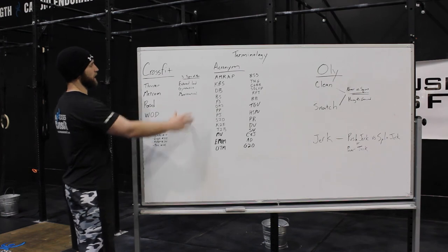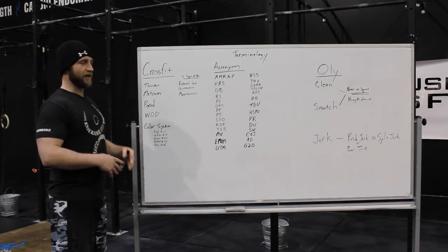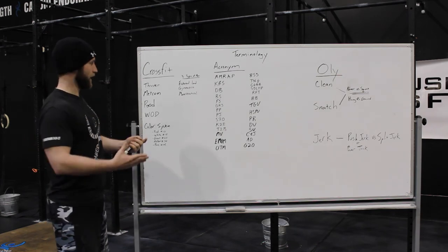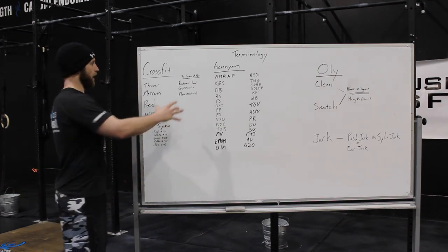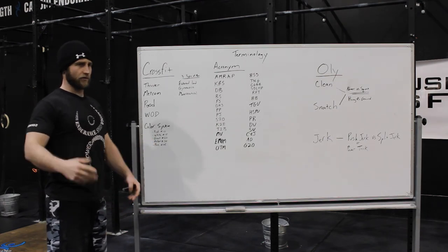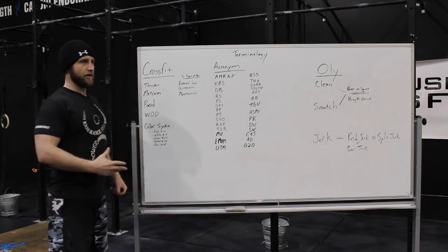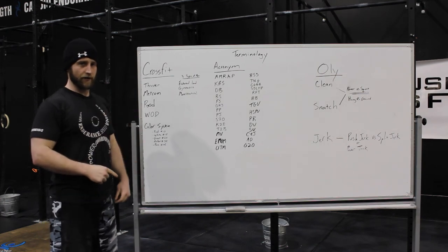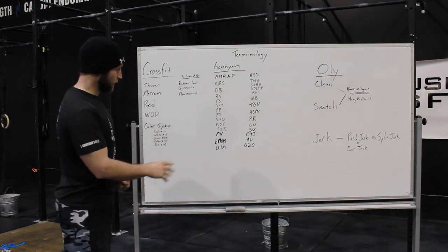The three types of movements we do are classified as: externally loaded movements — anything with weight, like medicine balls, kettlebells, farmers carries, barbells, or wall balls; gymnastics movements — a fancy way of saying bodyweight, like push-ups, pull-ups, air squats, and box jumps; and monostructural movements — traditional cardio like running, rowing, and jump rope, which are highly cyclical.